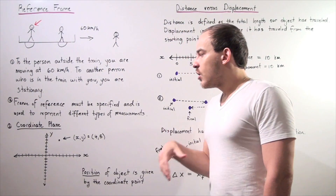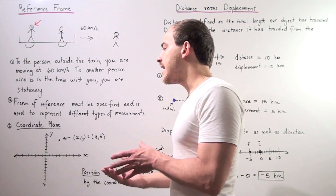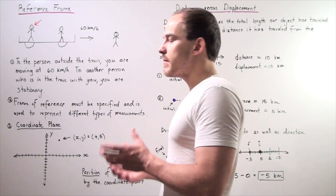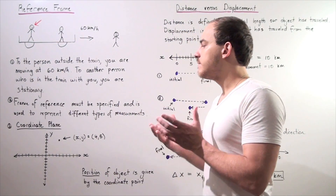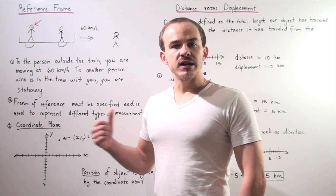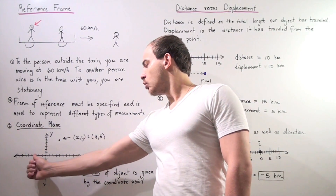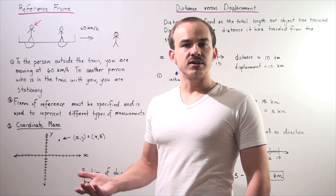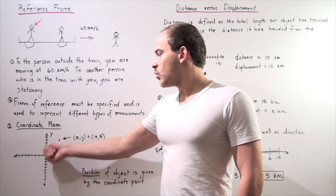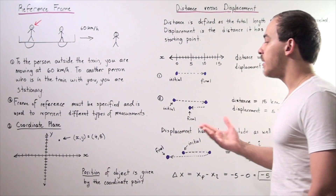One way to describe motion is to talk about speed as well as direction. The XY plane allows us to describe the direction of our object. We can say that if our object is moving in the one-dimensional plane, it's going along the X axis in the positive direction. Or if it's moving upward, we can say it's moving along the Y axis in the positive direction.